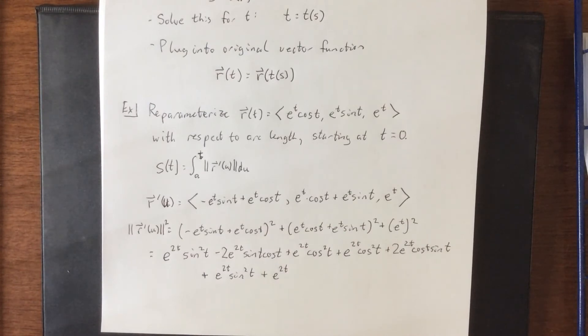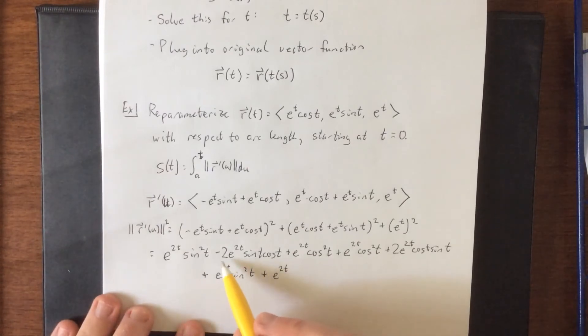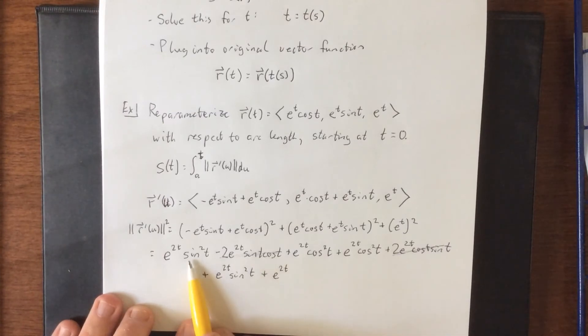And it's a doozy. Now the good news is, a whole bunch of stuff here is gonna cancel out. Specifically, this term cancels with this term. And any time we see an e to the two t with a sine squared of t, and then one with a cosine squared of t, those can be combined together.